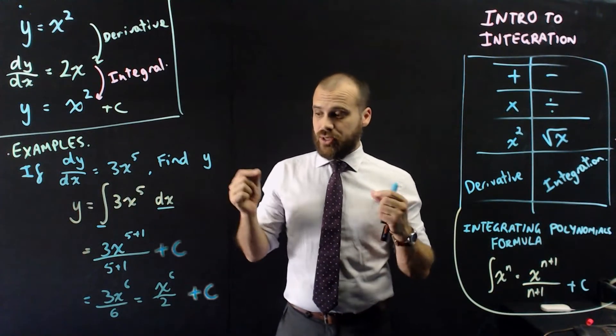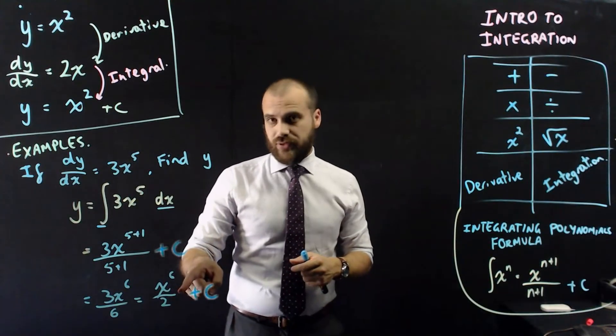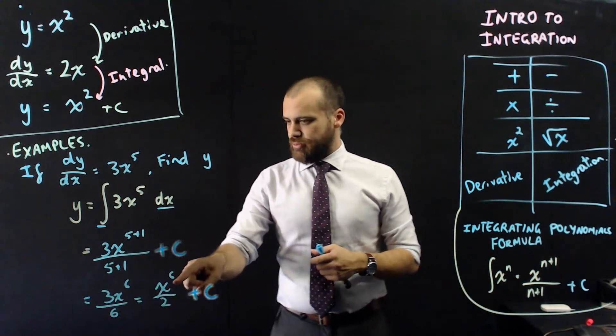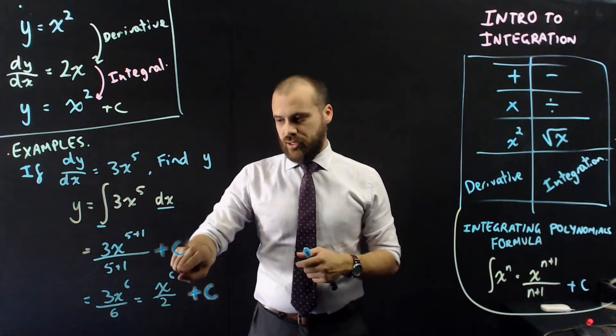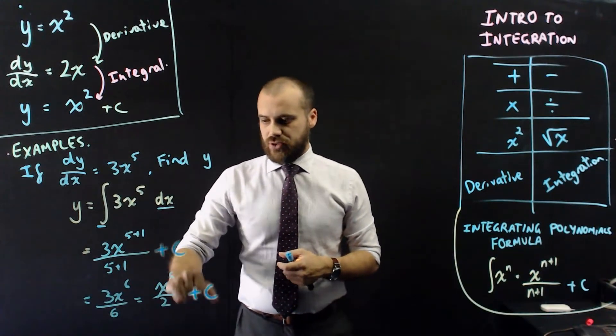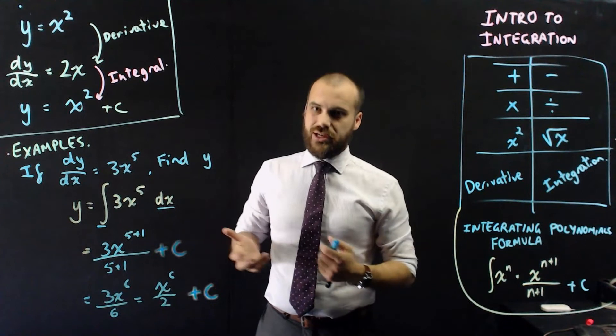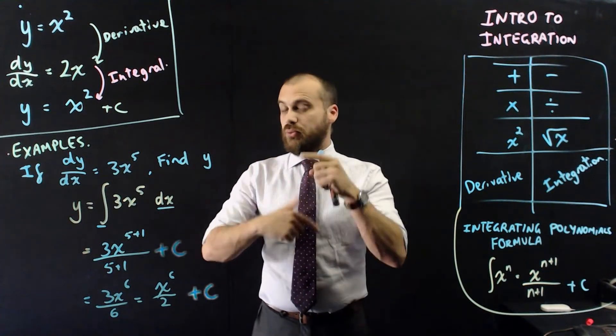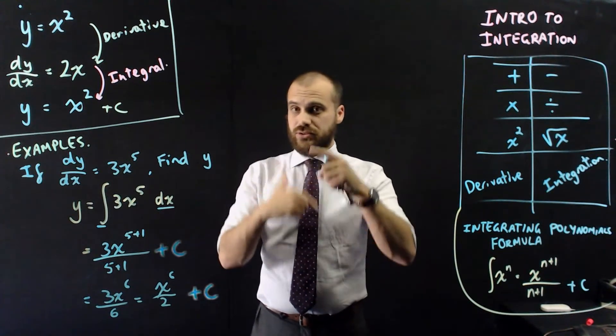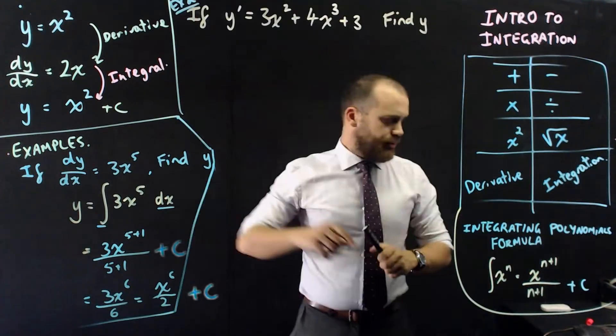It's the opposite of derivative. How do I know that? If I find the derivative of that, that would be decrease the power by 1, bring the power out the front, 6 over 2x to the 5, which is 3x to the 5. You can check your work if you know how to do derivatives, integrals, backwards and forwards.